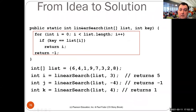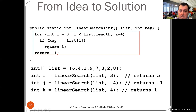Here is the method. This is a public static method that returns an integer index — linear search — takes an integer array list and an integer key. For every integer index i starting from zero, as long as i is less than the length of the list, if the key equals list[i] we return i, and we increment i after each iteration. If we didn't return from this method for any index up to the length and the condition becomes false, we return minus one, saying that element doesn't exist in the array.